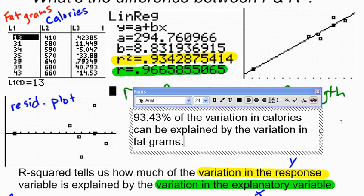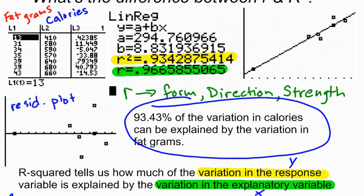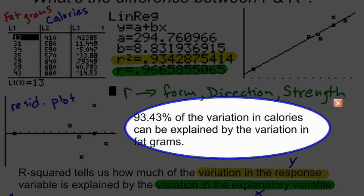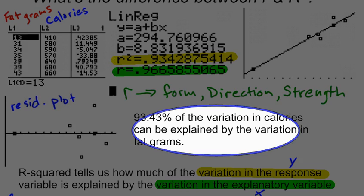And that right there, I mean, this is something that you'll be asked to do in AP Stats, explain R. And we recognize that there is variation in both variables. And when we compare the two and do a regression, R squared tells us the percentage of variation in our response variable that can be explained by the variation in our fat grams.